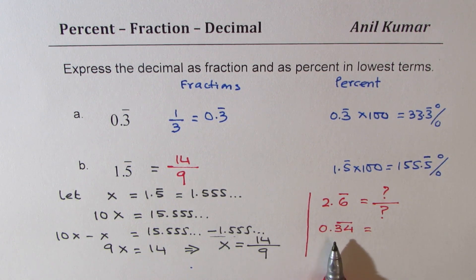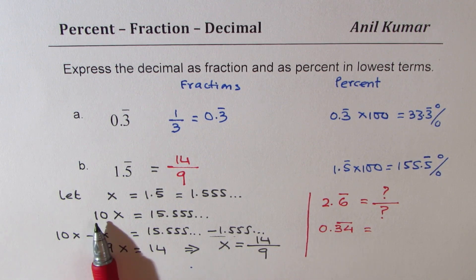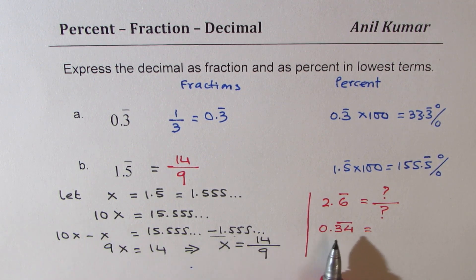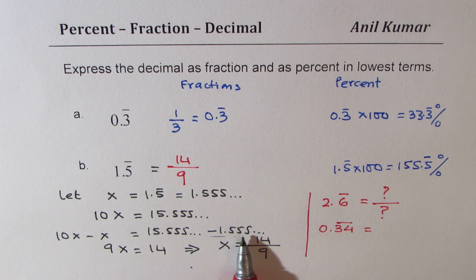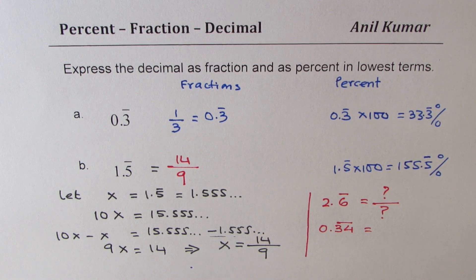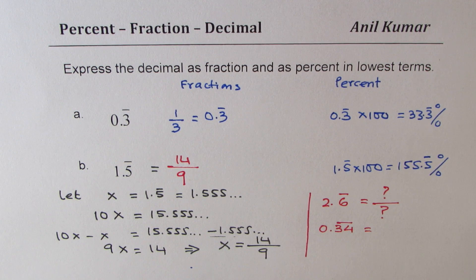For 0.34 recurring, you should multiply by 100 instead of 10 so that you can cancel all the repeating decimal places. I hope that helps. Feel free to write your comments and share your views. If you like and subscribe to my video, that'd be great. Thanks for watching and all the best.